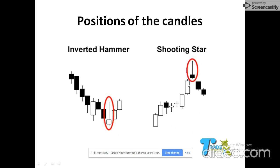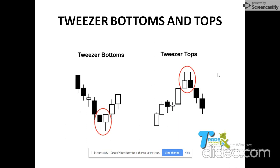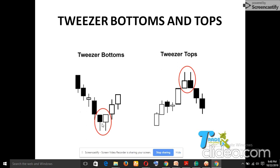The inverted hammer looks exactly like the shooting star but appears after a preceding downtrend, at a support zone or demand level. The price was unable to close below but closed above the support level — that confirms the reversal. The shooting star appears at the top, confirmed by a resistance zone. Tweezer patterns have the same shape and length of wicks — the first candle follows the preceding trend and the second candle signals the reversal.